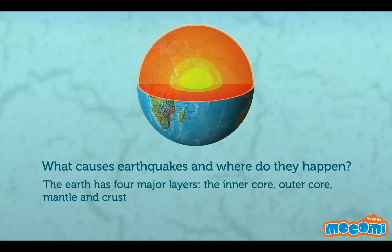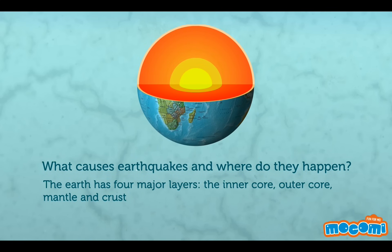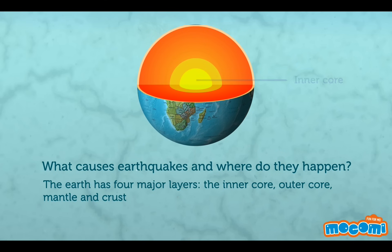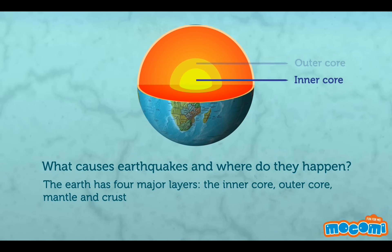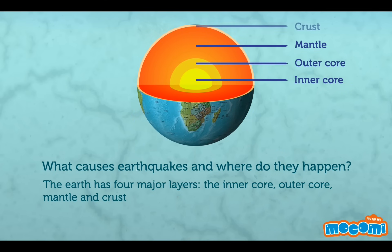What causes earthquakes and where do they happen? The earth has four major layers: the inner core, outer core, mantle, and crust.